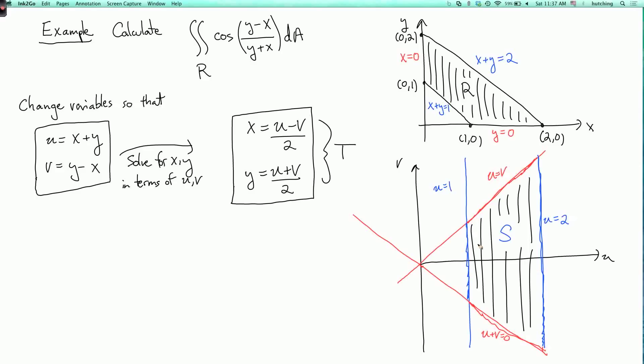So that's step two. So that's the region we need to integrate over. And the next task is we need to calculate the Jacobian to get the magnification factor. So the Jacobian d(x,y)/d(u,v) is the determinant of dx/du, dx/dv, dy/du, dy/dv.